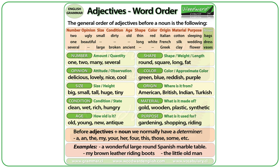Also we have: Number, Opinion, Size, Condition, Age, Shape, Color, Origin, Material, Purpose. In this second version we also include Number and Condition. I recommend watching our video about adjective word order for more details about each category.